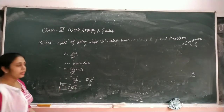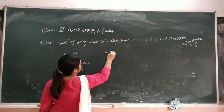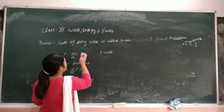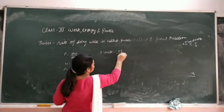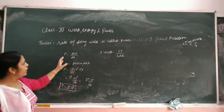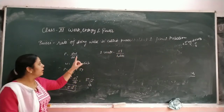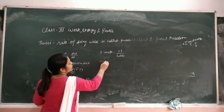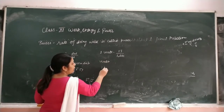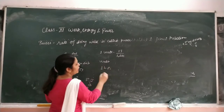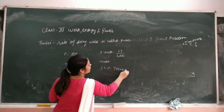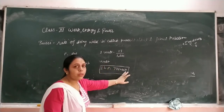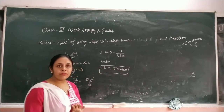Now unit of power: Power ki unit kya hoti hai? Watt. One watt is defined as: if one Joule of work is done in one second, then power is said to be one watt. Generally unit is written as Watt. There is another unit: horse power. One horse power and watt mein kya relation hai? 746 watt. You just need to remember this relation for numericals - if horse power is given, convert to watt: 1 HP = 746 W.